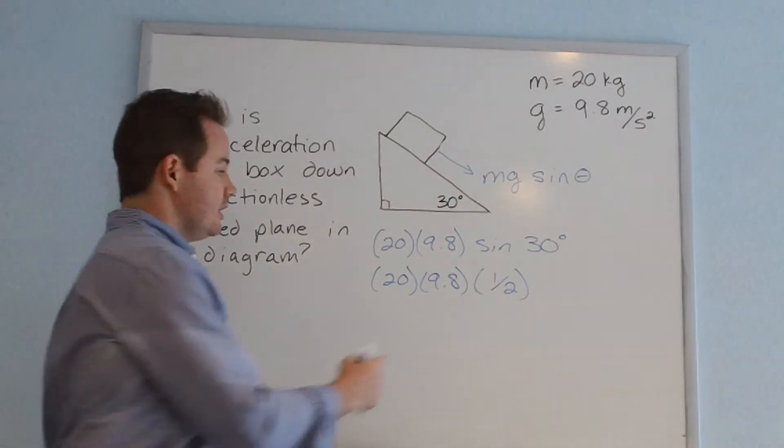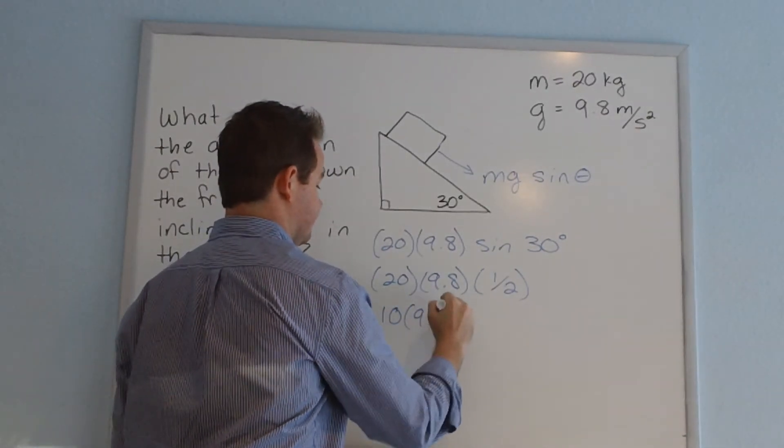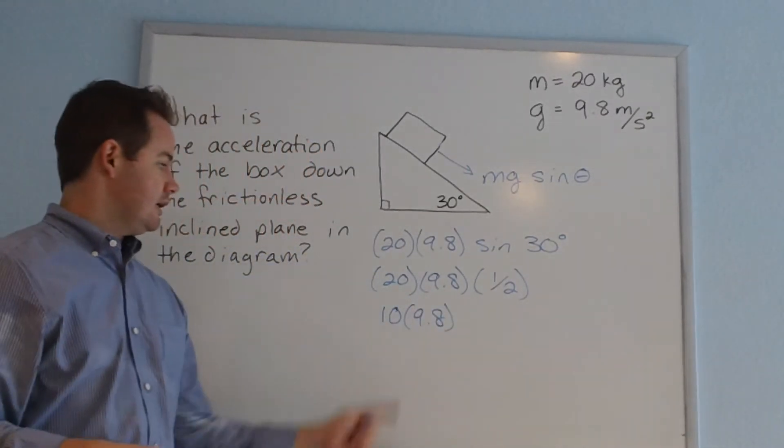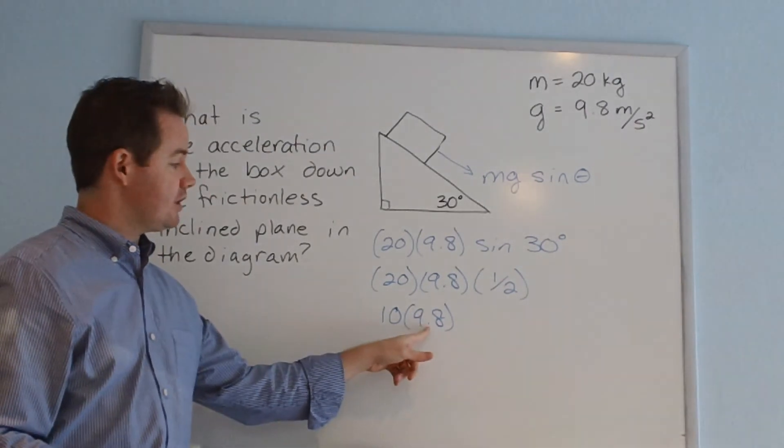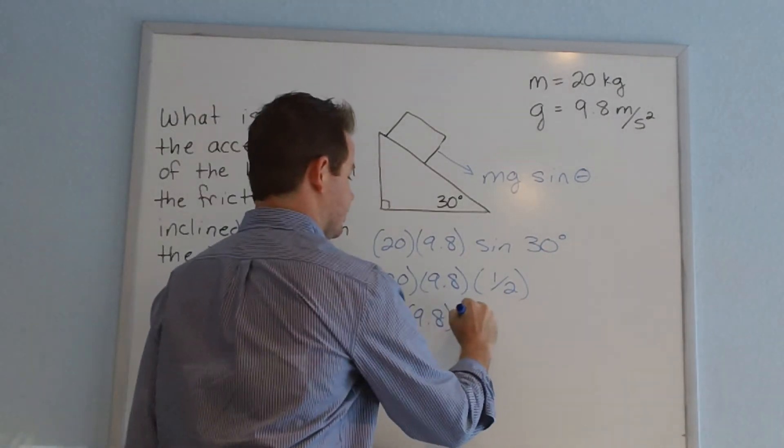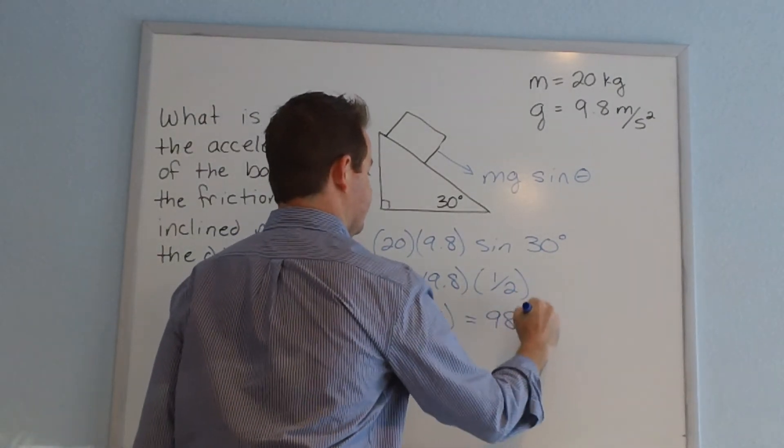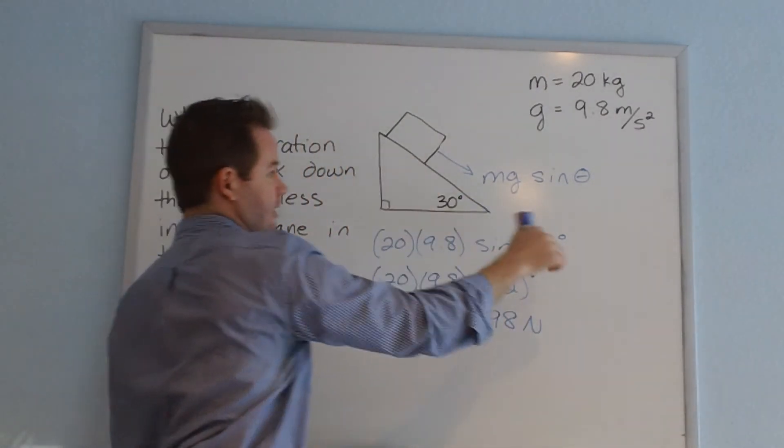Half of 20 is 10. So this simplifies to 10 times 9.8. Now, for this calculation, any time you're multiplying something times 10, you can simply move the decimal one place to the right, making our result 98 newtons for the force pulling this object down the inclined plane.